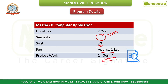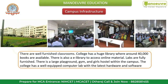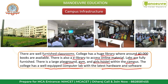For campus and infrastructure, the college has well-furnished classrooms and a huge library with around 40,000 books, plus an e-library where online material is easy to access. Labs are fully furnished, and there is a large playground, gym, and girls' hostel within the campus. The college also has a well-equipped computer lab with the latest hardware and software.